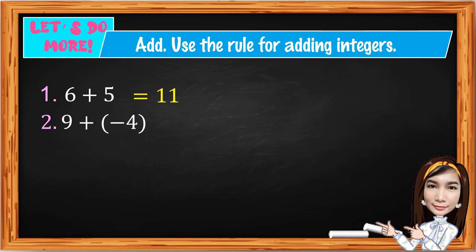Number 2: 9 plus negative 4. They are unlike signs, so subtract the absolute value: 9 minus 4 gives 5. Keep the sign of the bigger number, which is positive 9. So the answer is positive 5.